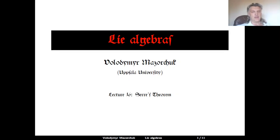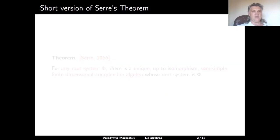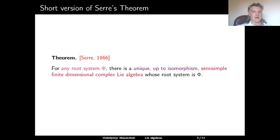Hello and welcome to Lie Algebras. In this lecture, lecture number 16, we will discuss Serre's theorem on classification of semi-simple finite-dimensional complex Lie algebras. So let's immediately start with a short version of the theorem, which is due to Serre from 1966. For any root system phi, there is a unique, up to isomorphism, semi-simple finite-dimensional complex Lie algebra whose root system is phi.